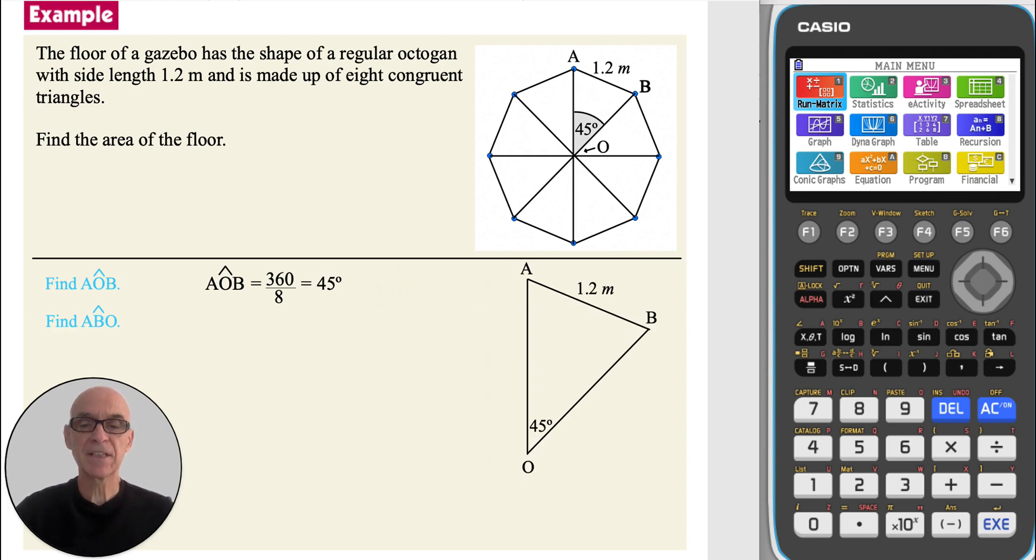Next, finding angle ABO. Since AO equals BO, the triangle is isosceles. Subtracting 45 degrees from 180, and dividing by 2, gives the value shown.